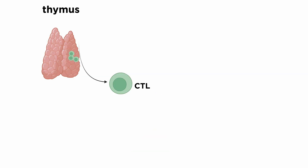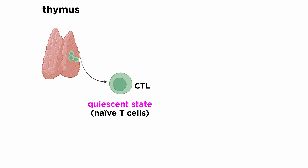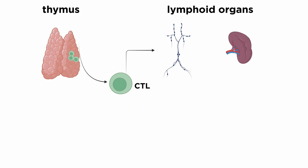CD8-plus T-lymphocytes develop in the thymus, where they are selected for their ability to recognize non-self peptides in the context of MHC class 1 molecules. After they exit the thymus, they exist in a quiescent state and are referred to as naive cells. Naive CD8-plus T-cells circulate between peripheral lymphoid organs, such as the spleen and lymph nodes, via the arterial and lymphatic systems.